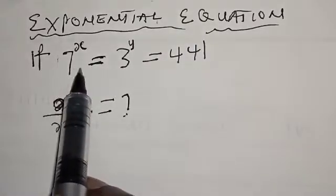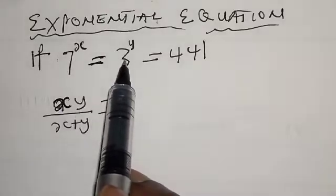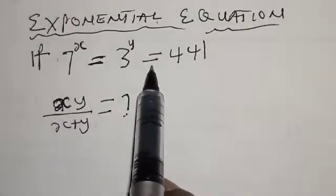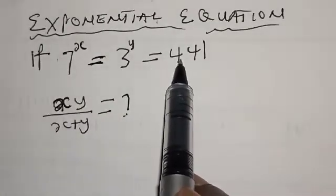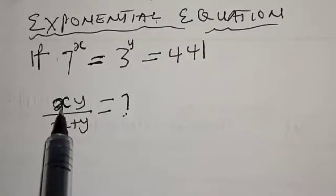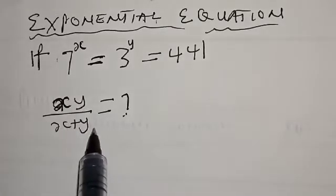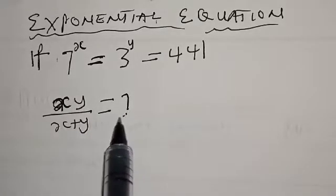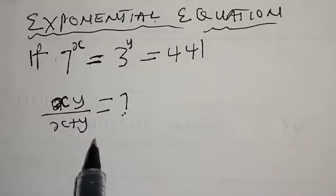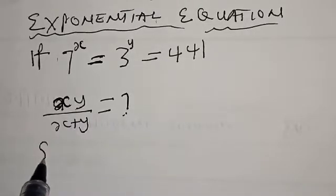Exponential equation: if 7 raised to power x is equal to 3 raised to power y is equal to 441, then x·y over x plus y is equal to what? We are asked to find the value of x·y over x plus y. Solution.